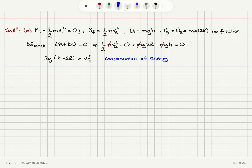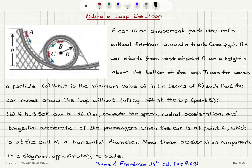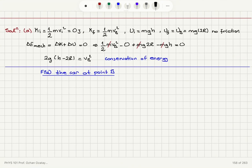Now I concentrate on the free body diagram at point B — the car with passengers at the top of the loop. At point B, I feel the weight and there will be a normal force from the track. They are both pointing down towards the center, in the minus r-hat direction. So I see the weight mg pointing down and the normal force from the track also pointing down. The net radial force is minus mg r-hat minus the normal force r-hat.